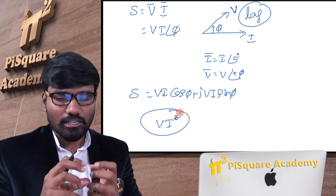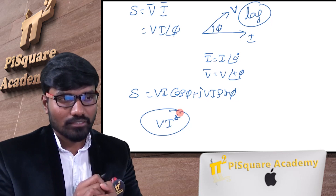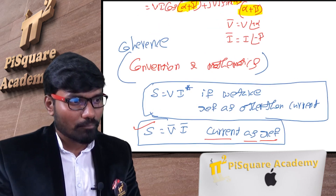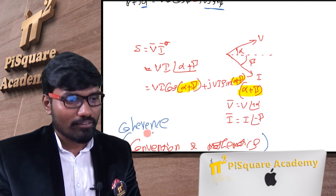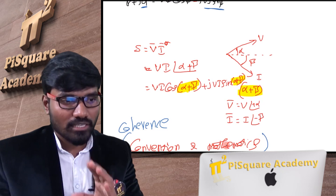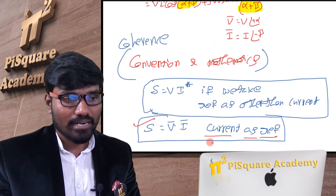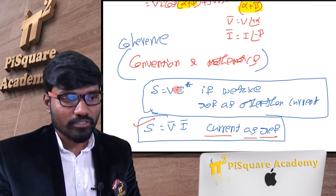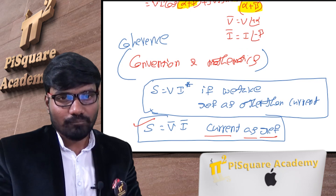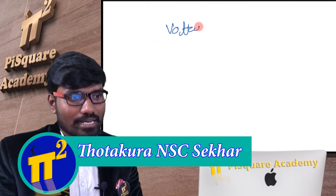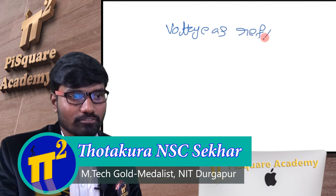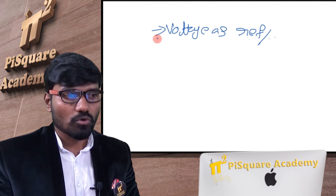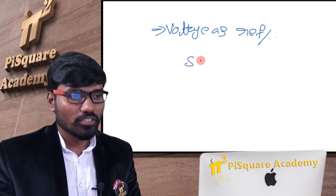If you use voltage or any reference other than current, then you must use V i conjugate to have a proper match between convention and mathematics. I know it may be a little difficult to accept this fact — try with different examples and you will understand. Since in most cases we take voltage as reference (because current keeps changing with the load), we must use V i conjugate. This is the complete answer.